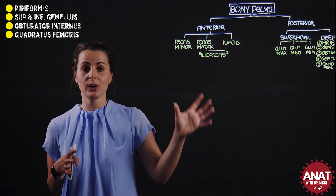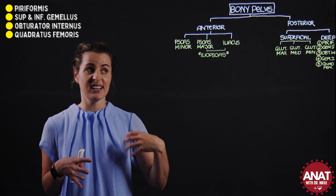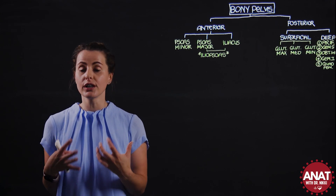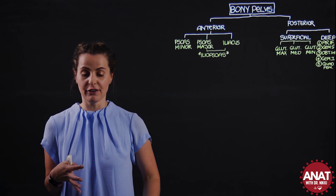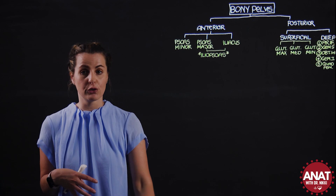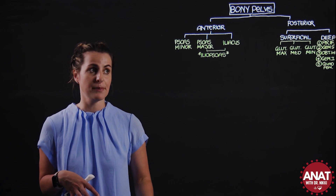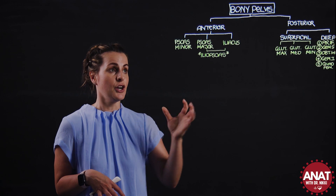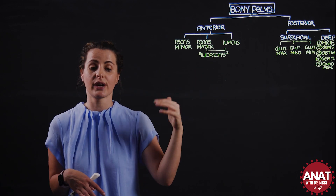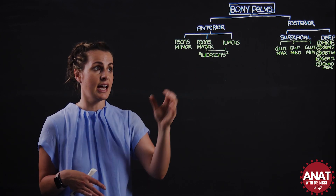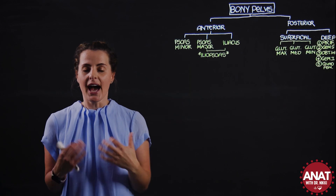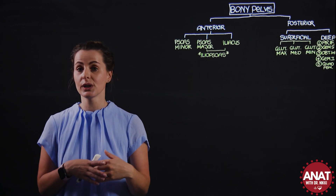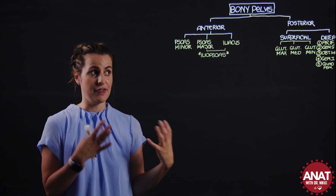Coming back to the muscles that attach anteriorly, we could also think about longer muscles that cross the hip joint originating from the thigh that also act on the hip. Technically you could include rectus femoris and sartorius under this category; however, for simplicity it's easier to include these in the compartments of the thigh.